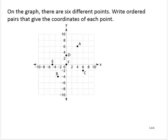On the graph, there are six different points. Write ordered pairs that give the coordinates of each point.